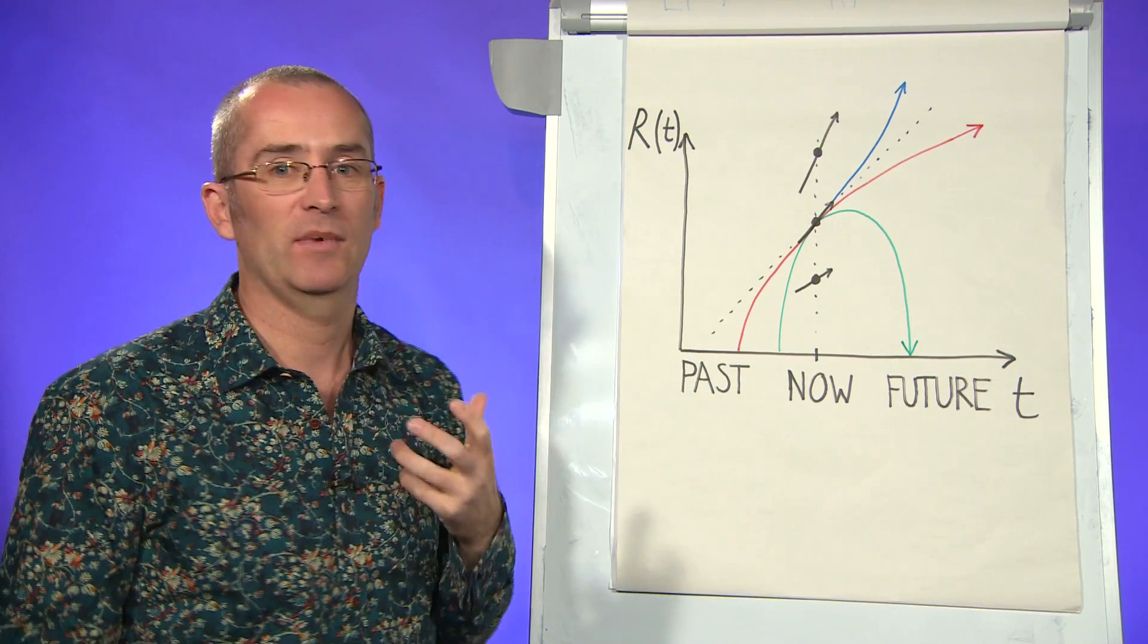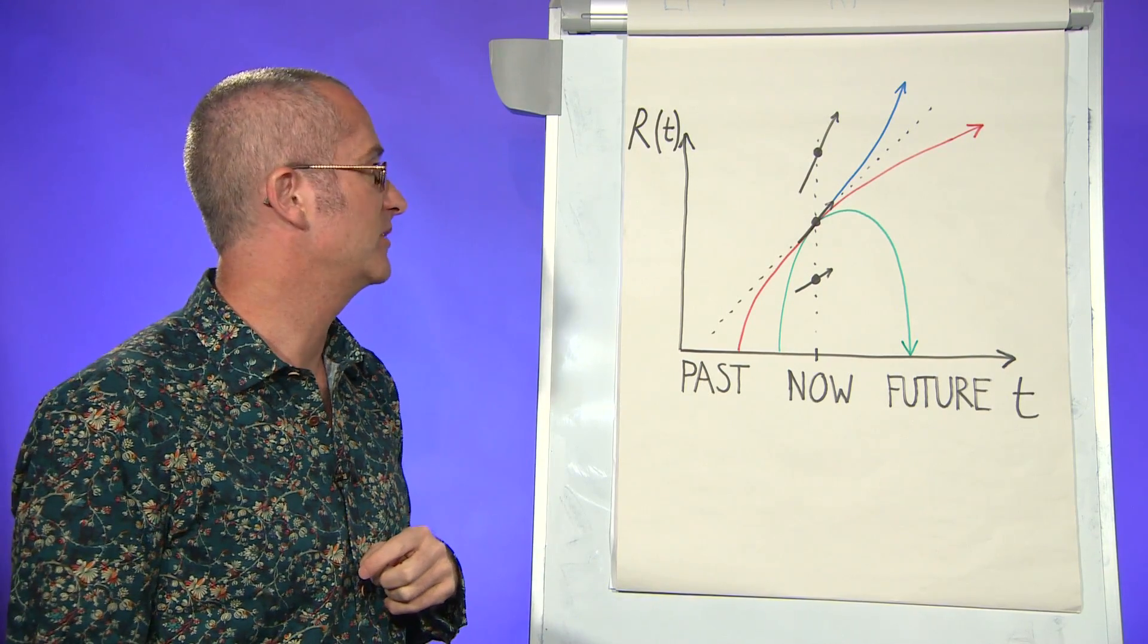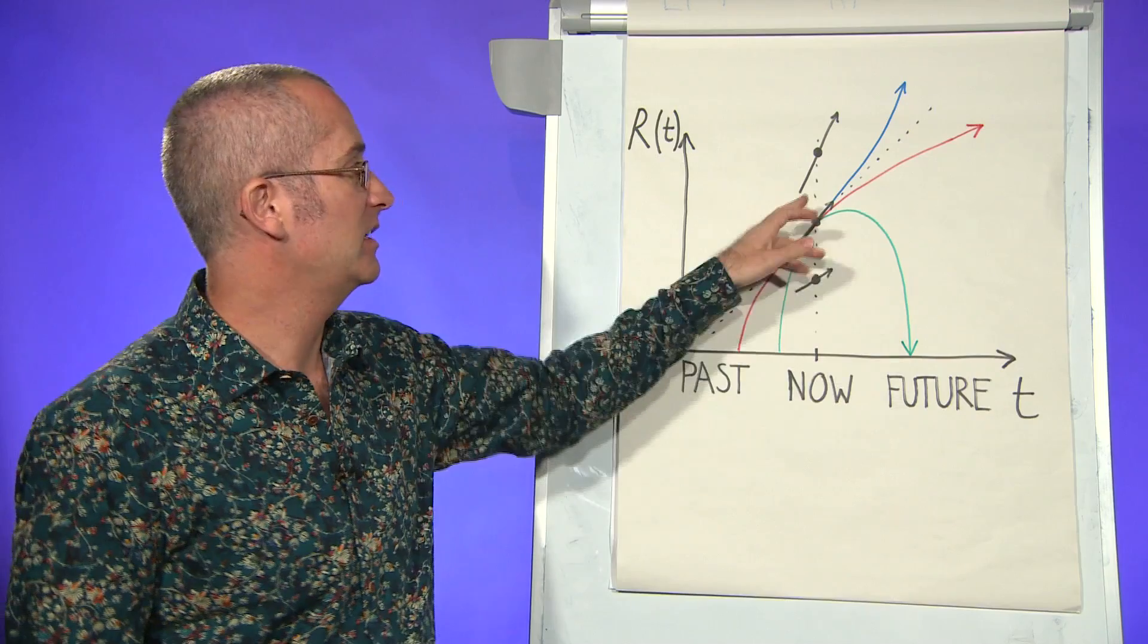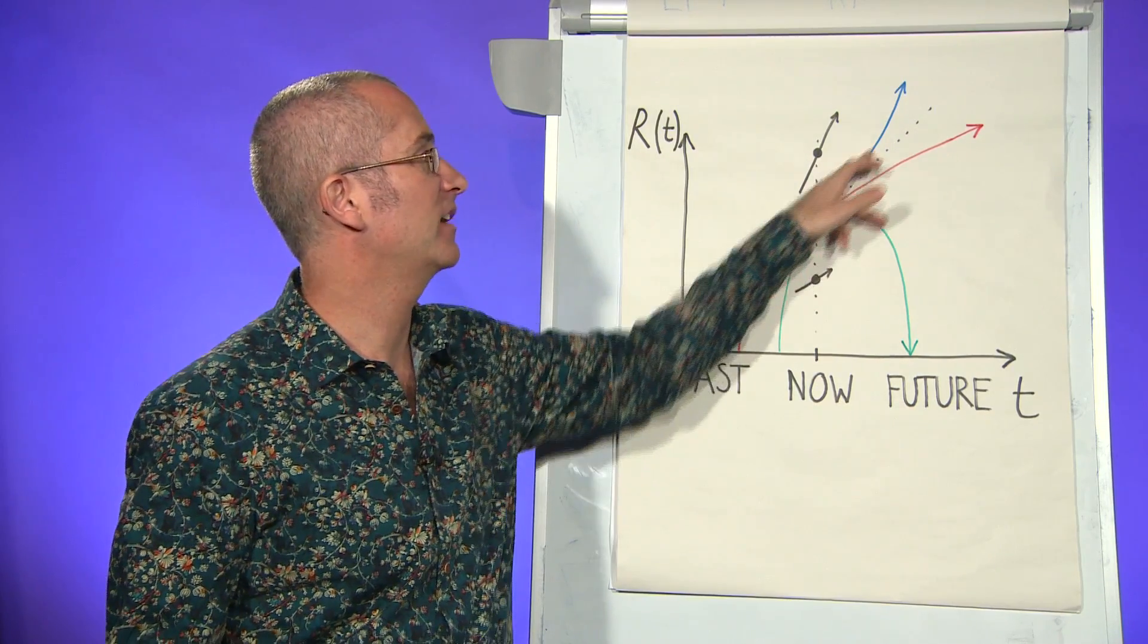However, it turns out that when people made more detailed measurements of the expansion of the universe, that the expansion isn't slowing down. It seems it's actually getting faster.